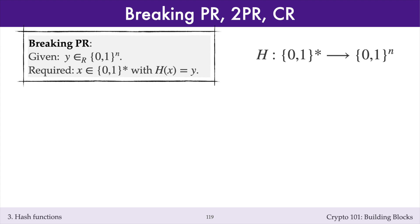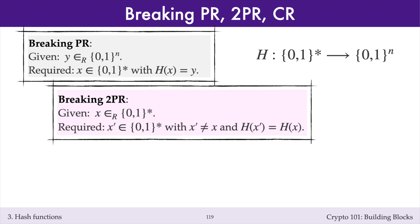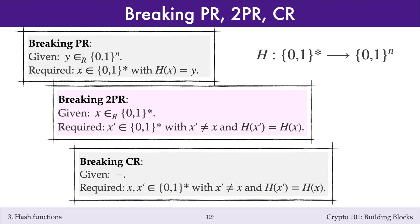To break pre-image resistance, you're given a randomly selected hash value y, and you have to find any message x whose hash equals y. To break second pre-image resistance, you're given a randomly selected message x, and you have to find a second message x-primed, different from x, with the same hash as x. To break collision resistance, you're given nothing, and you have to find two distinct messages x and x-primed which have the same hash values.